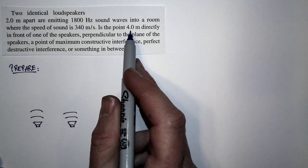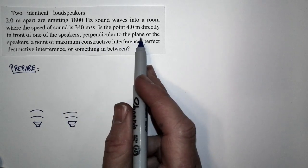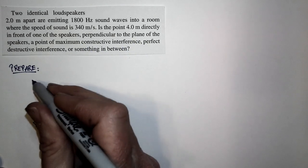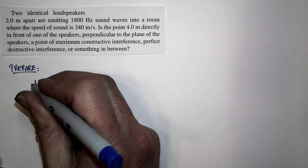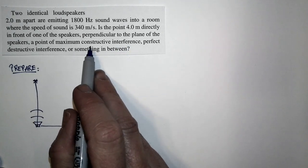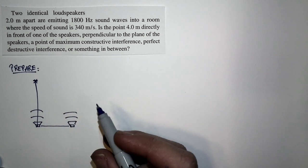You want to know at a point four meters directly in front of one of the speakers, perpendicular to the plane of the speaker, so that's perpendicular to this line. So at a point four meters in front of this speaker, right here, is this a point of maximum constructive interference, perfect destructive interference, or something in between?